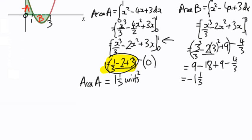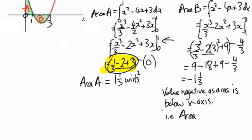What we need to do is make the point that we knew it was going to be negative, and we're going to take the positive value. The value is negative as area is below the x-axis. So we're going to see that Area B is positive 1 and 1 third square units.